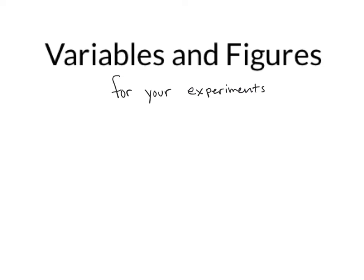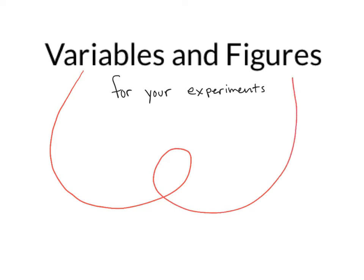This presentation is going to talk about the variables and figures which you are going to use in your experiments. The type of variable that you choose in your experiments will determine the type of figure that you use. We are also going to review the scientific method, because that's what we're going to use to set up our experiments, and then specifically end with the type of figures we can make based on our variables.